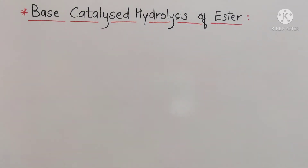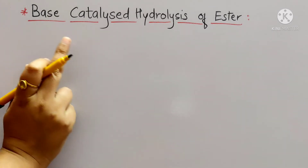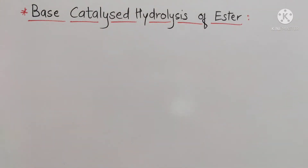We have already studied the acid catalyzed hydrolysis of ester, which is reversible and doesn't go to completion. The alkaline hydrolysis of ester to get the sodium salt of acid and alcohol is called saponification, or the base catalyzed hydrolysis of ester, and it is not reversible.